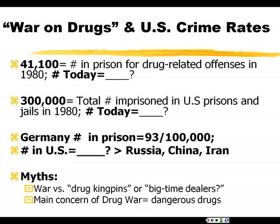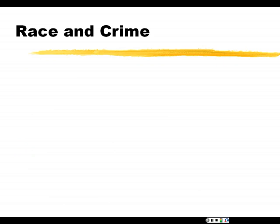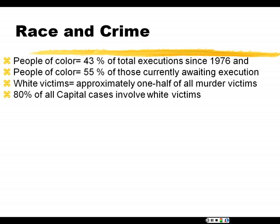We cannot talk about criminal justice in the United States without talking about race. There's a phenomenal book I would recommend called The New Jim Crow, written by Michelle Alexander, who has meticulously documented this issue of race and crime in our country and how it predominantly affects people of color — in particular African American men. These statistics come from her book. People of color account for 43% of all executions since 1976, and 55% of those currently awaiting execution.